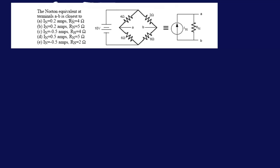We're trying to find Norton, which would be IN and RN. Since this is a multiple choice question, finding IN is more challenging than finding the equivalent resistance, so we're gonna find RN first and then eliminate answers from there.